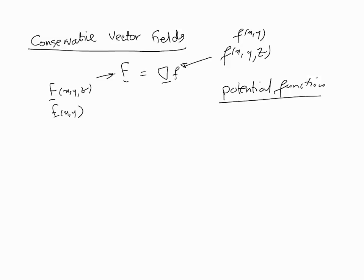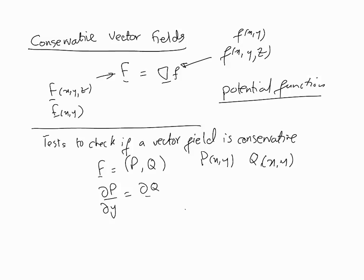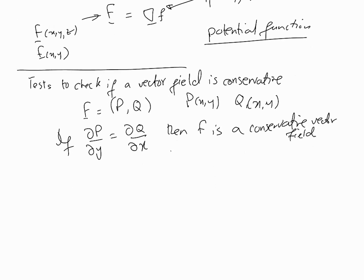Let's comprehensively cover the tests to check if a vector field is conservative. If we have a vector field with components P and Q as functions of x and y, a simple test is: if partial P with respect to y equals partial Q with respect to x, on a positive domain of x and y, then F is a conservative vector field. This is the first easy test, but it works only for vector fields of variables x and y.